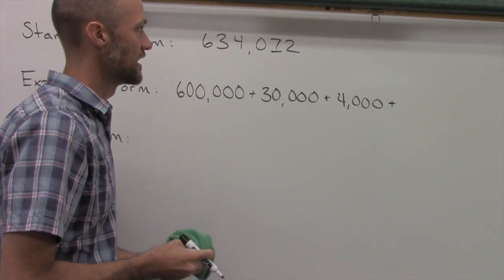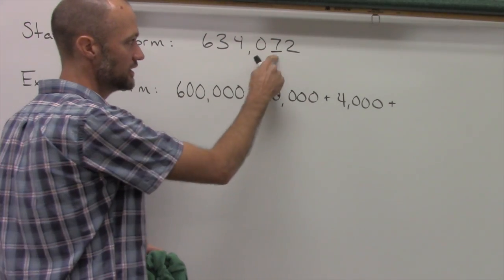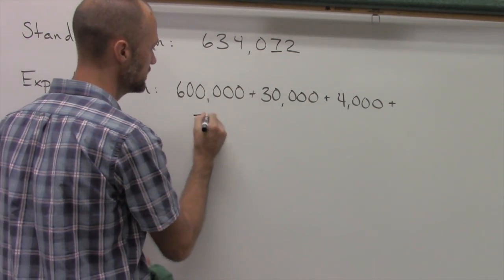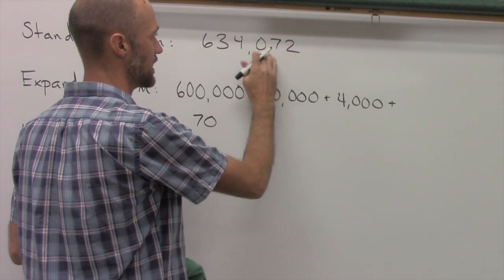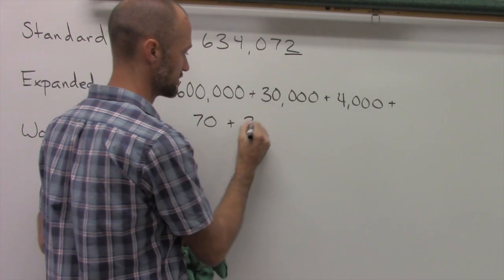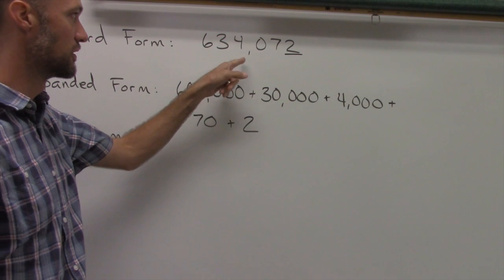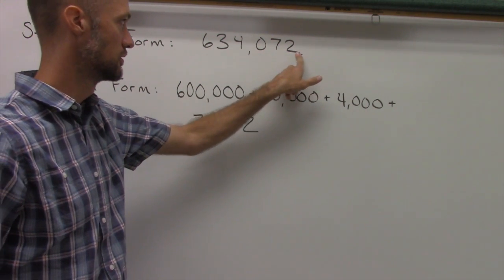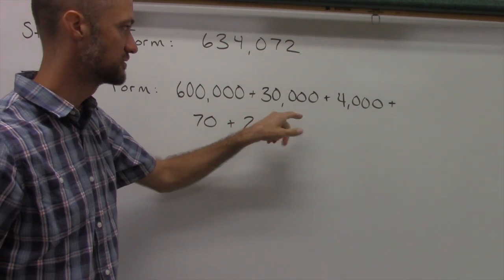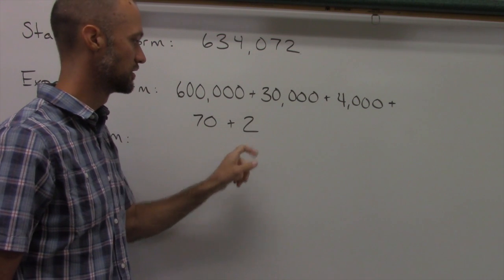The next digit is a 7, and its value is 70 because it's a 7 in the tens place. And finally, the last one is the 2, and it's just a 2 because it's in the ones place. So expanded form for 634,072 looks like this: 600,000 plus 30,000 plus 4,000 plus 70 plus 2.